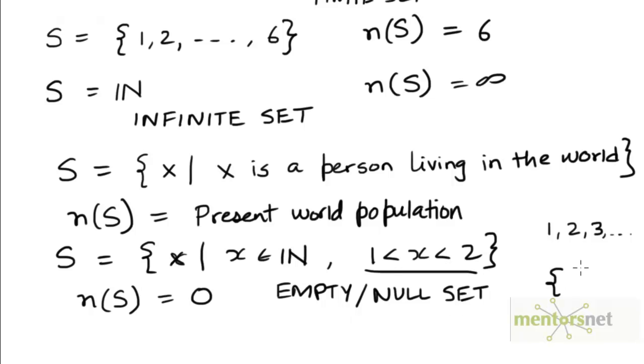So an empty set can be represented in roster form by just a pair of curly brackets with nothing inside. The convention however is to represent it by the Greek letter Phi.